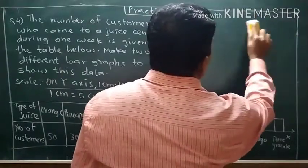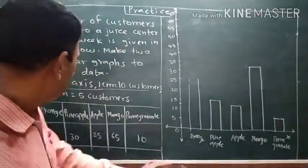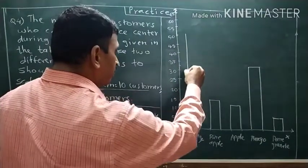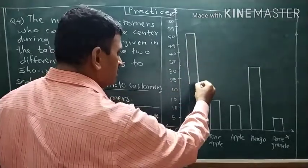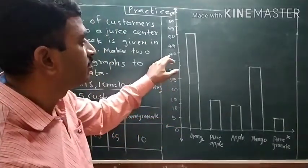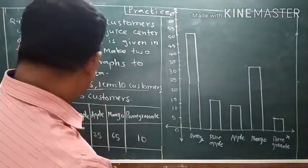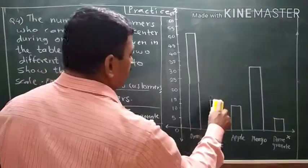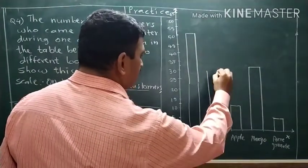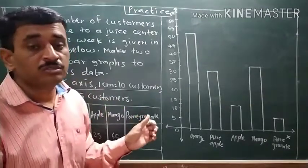Now I will draw this. First we will draw the bar for orange. For orange, fifty customers are there. When we take the scale of five customers per one centimeter, then we count: five, ten, fifteen, twenty-five, thirty-five, forty, fifty-five, sixty-five on the y-axis. For pineapple, thirty customers — we have to draw two separate bar graphs, and this one will help out.